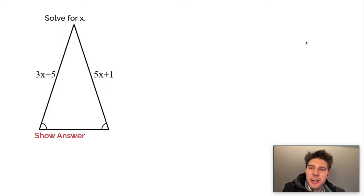Hey guys, welcome to this isosceles triangle video. We're going to solve for x in this isosceles triangle. The whole idea of an isosceles triangle is that these base angles are equal and the sides opposite of those base angles are going to be equal.